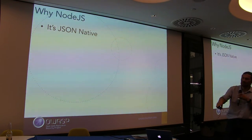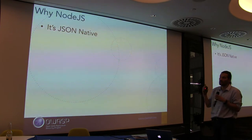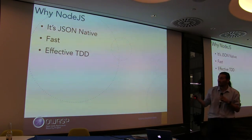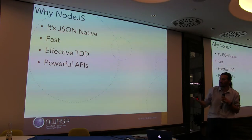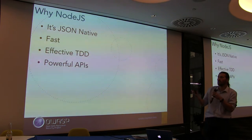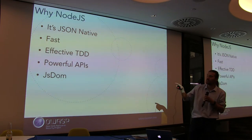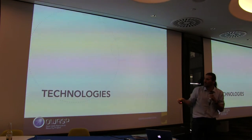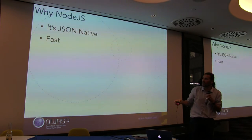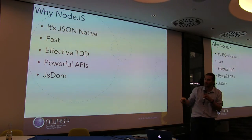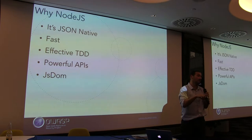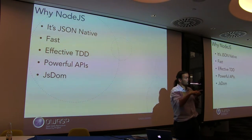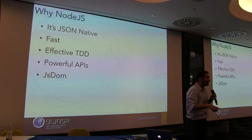Why did I choose Node.js to do this? Because it's JSON native — that is massive. It's fast. It supports effective testing development. There are some really powerful APIs. JSDOM is just freaking insane because JSDOM allows you to run a full-blown environment — client and server — at the same time.